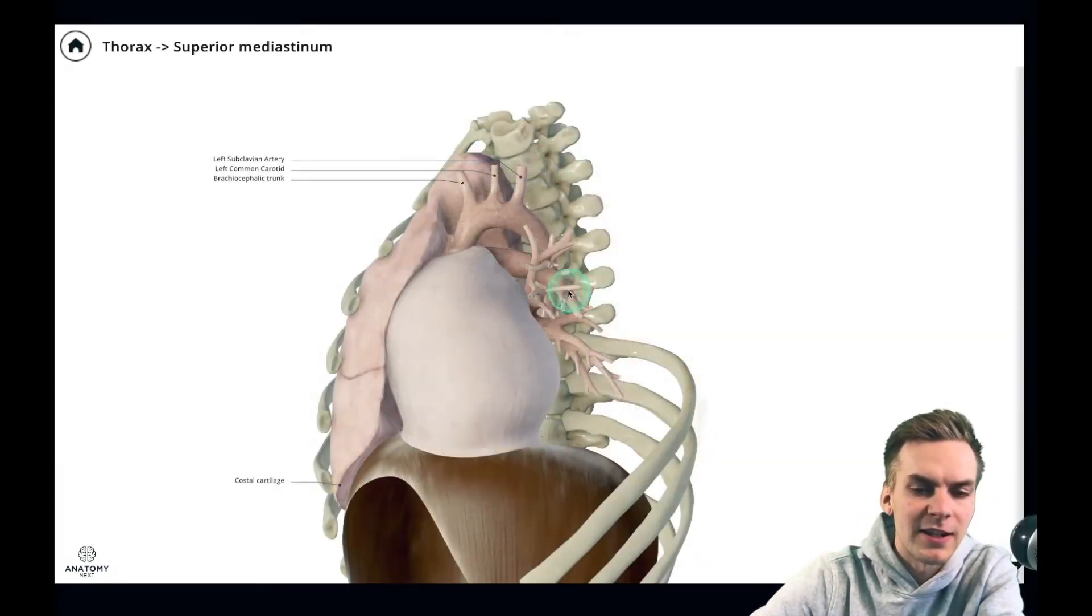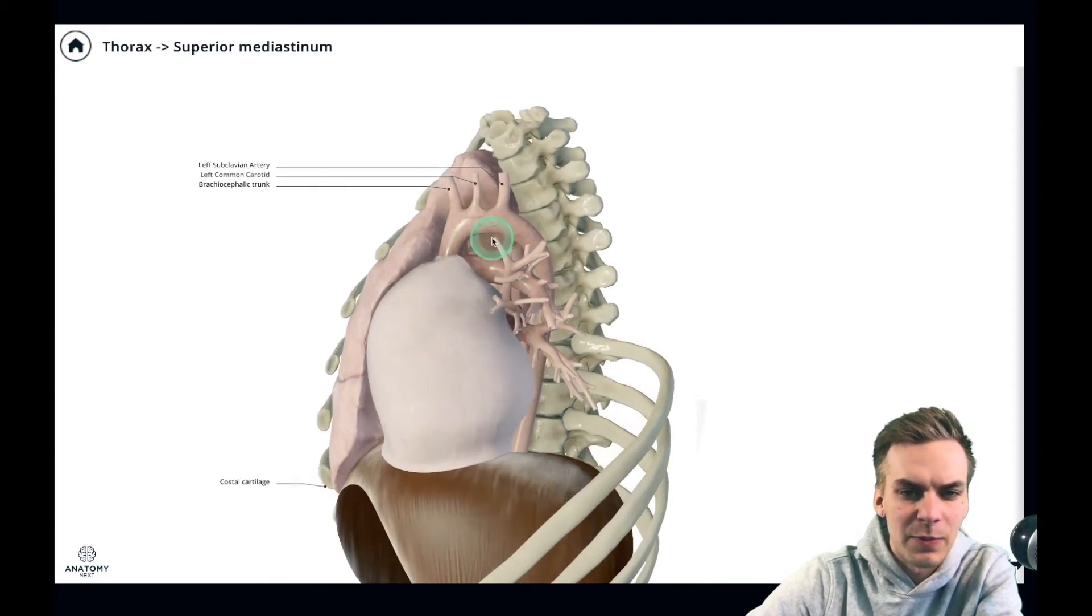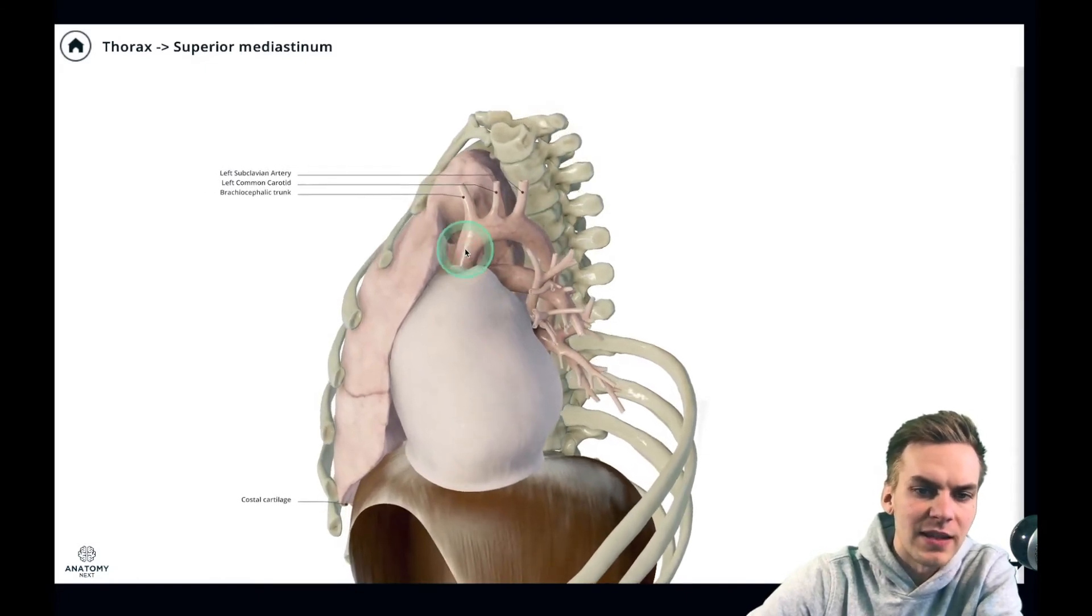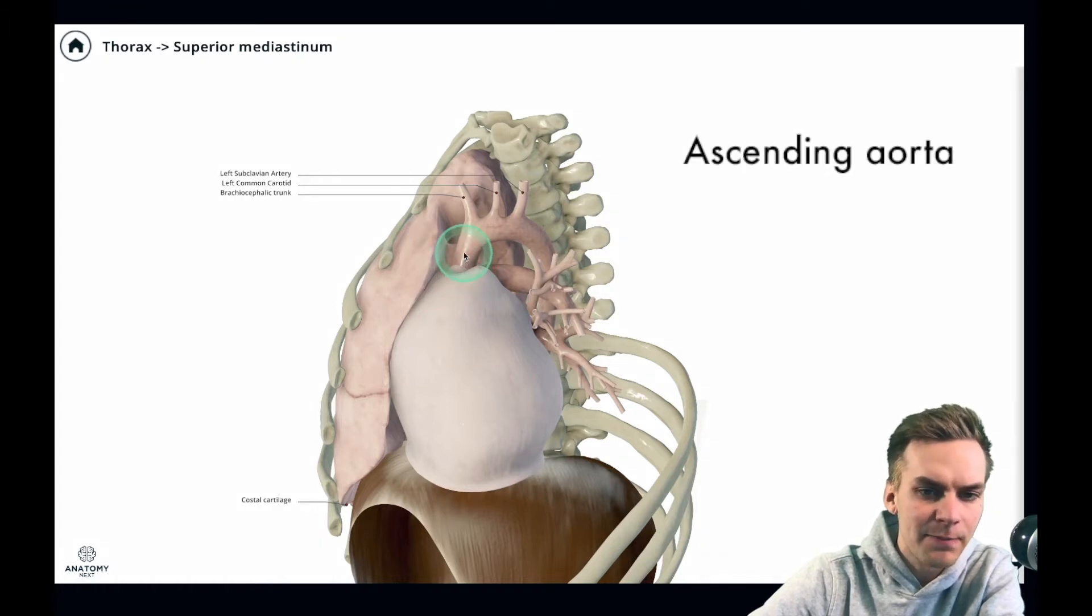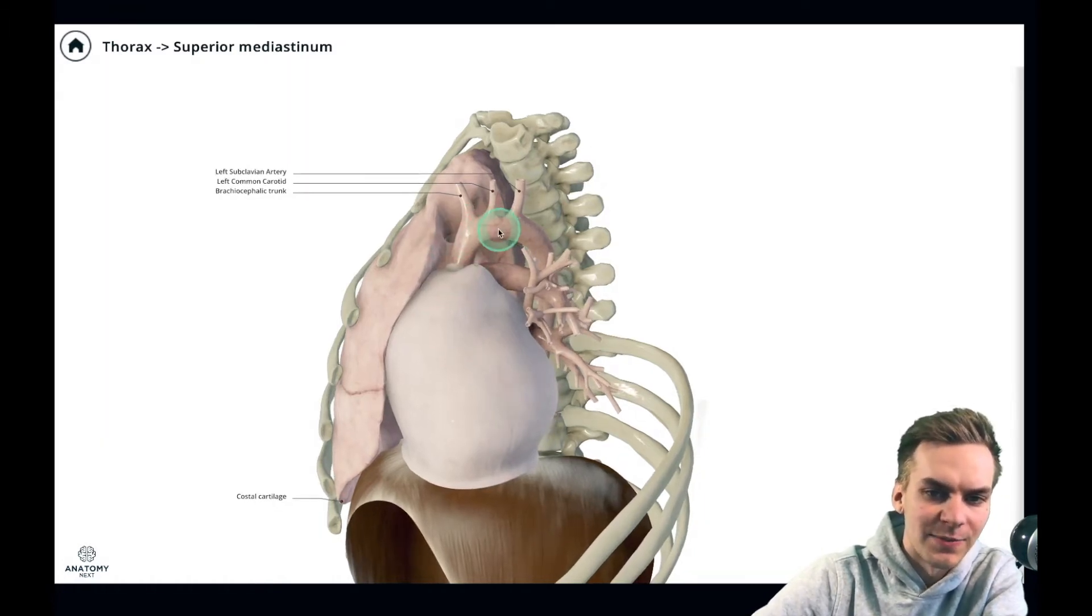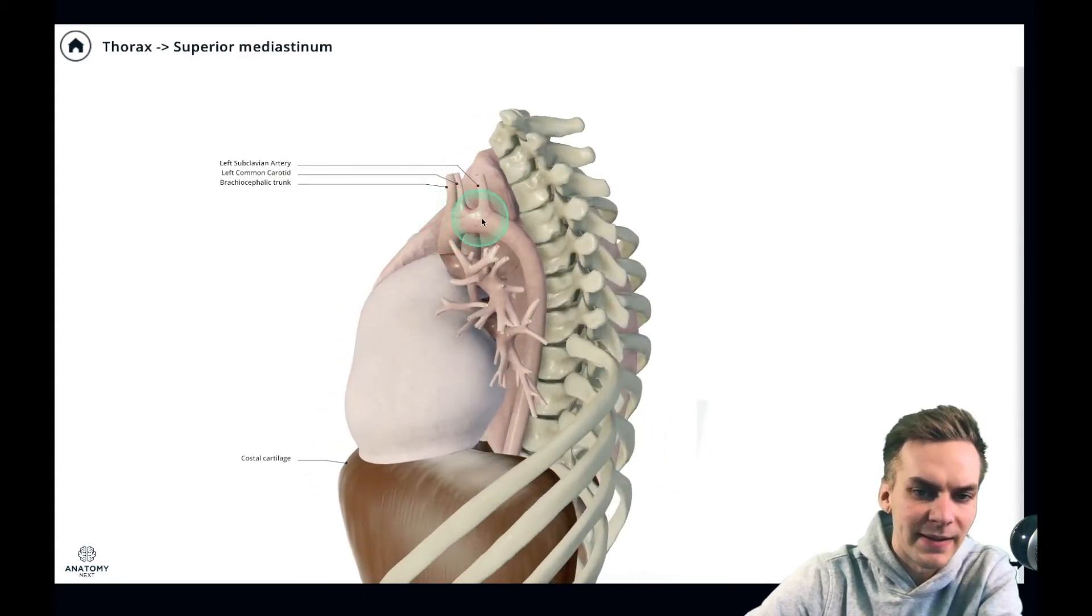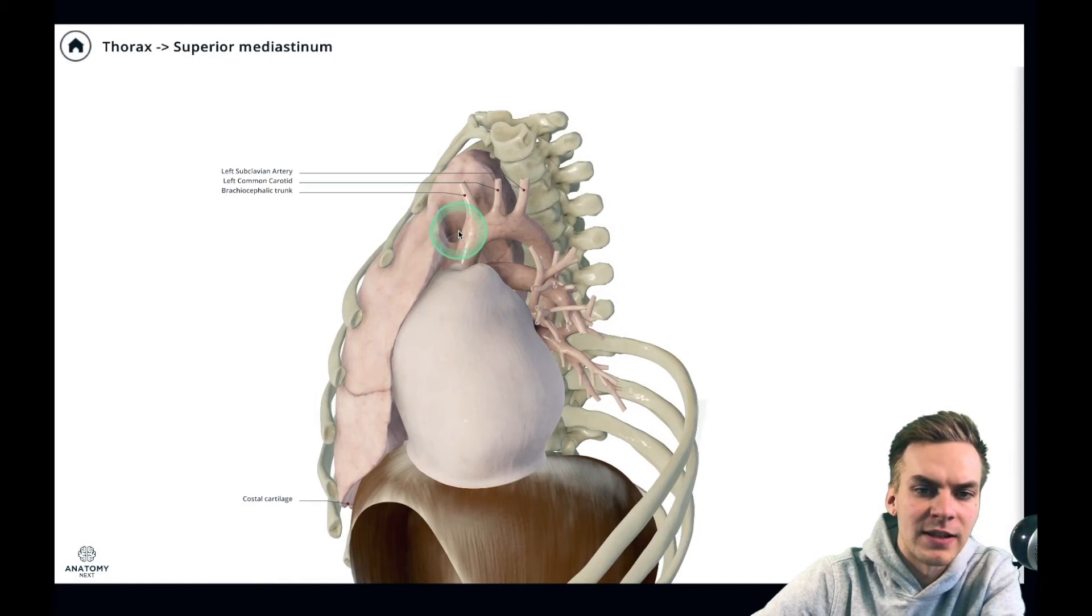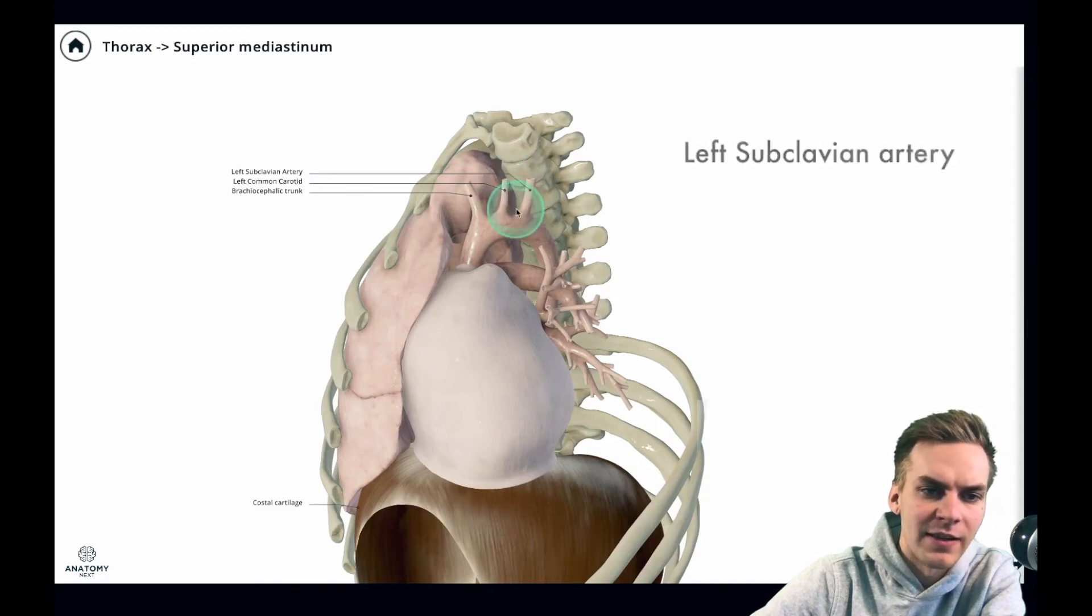And as I mentioned earlier here in the superior mediastinum we can also see the aorta and to be exact we see the arch of the aorta and partly the ascending aorta. So in short, the aorta comes out of the left ventricle as the ascending aorta. It ascends for a little while and then it arches posteriorly. And this part where the aorta is bending posteriorly is called the arch of the aorta. And the arch of the aorta gives off three very important branches and these are the brachiocephalic trunk, left common carotid artery, and the left subclavian artery.